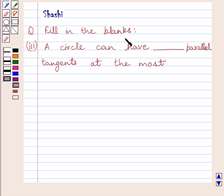Question says, fill in the blanks. Third part is, a circle can have dash parallel tangents at the most.